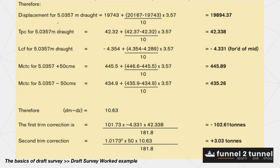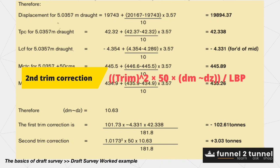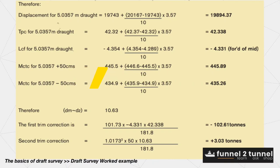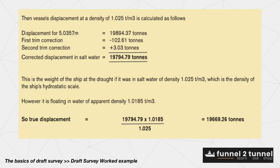The second correction is called the second trim correction or Nemoto correction, the formula for which is: square of the trim multiplied by 50 multiplied by the difference of MCTC. This correction is always positive and is added. The third correction is called the list correction or heel correction, which is also always positive. In this example it is not applied.